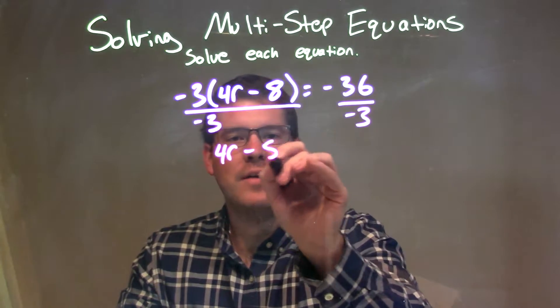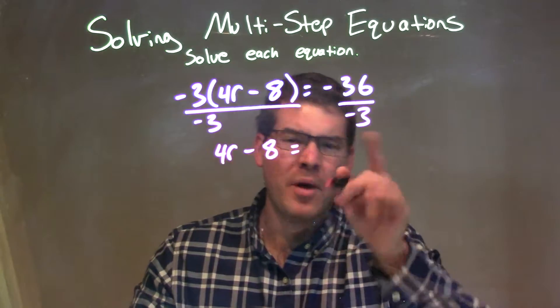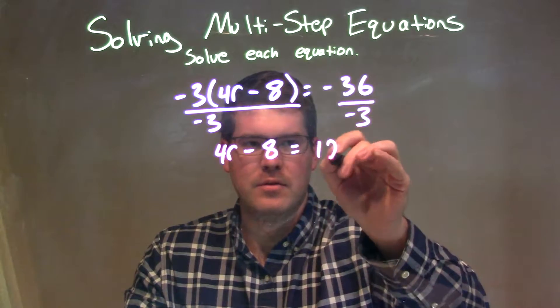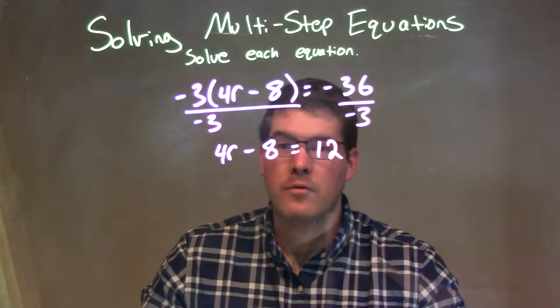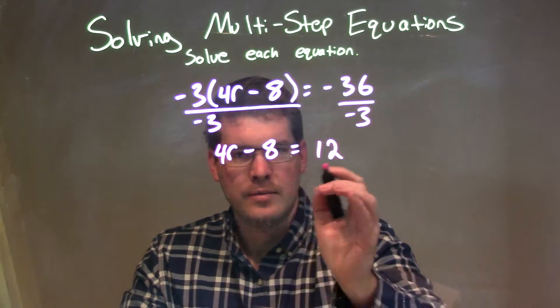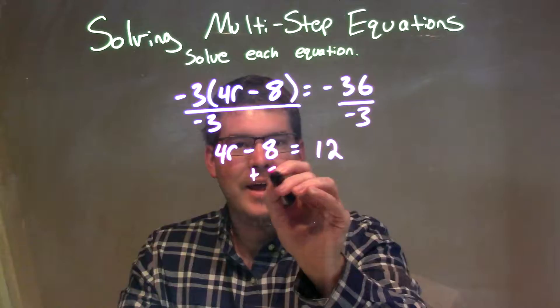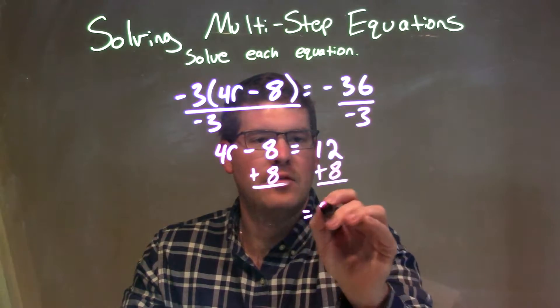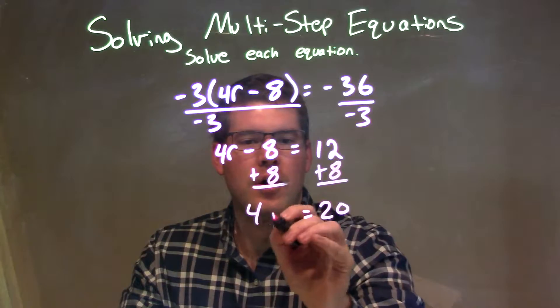I'm left with 4r minus 8 on the left, looking inside the parentheses. But on the right here, negative 36 divided by negative 3 is a positive 12. So then from there, I'm just solving for r, so let's bring everything else over. We add 8 to both sides here. 12 plus 8 is 20, and we have 4r on the left.